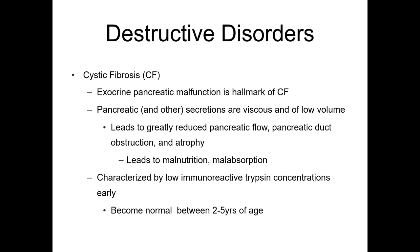Cystic fibrosis is another generalized disorder. We typically think of it as a respiratory disorder, but it has implications for digestive function. It is an exocrine pancreatic malfunction — pancreatic and other secretions are viscous and of low volume, leading to greatly reduced pancreatic flow, pancreatic duct obstruction, and atrophy, which leads to malnutrition and malabsorption. There is a defect in a chloride uptake pump; because chloride is retained, we get a thick and viscous solution lining the lungs and GI tract, impacting breathing and nutrient absorption. This also affects the pancreas, which is why cystic fibrosis is discussed here.